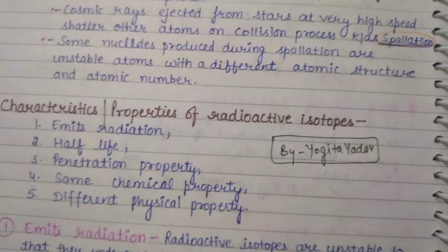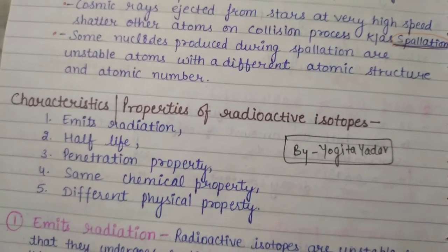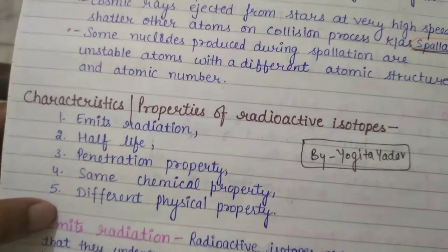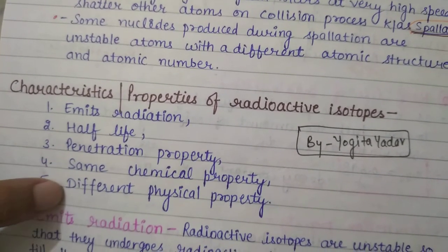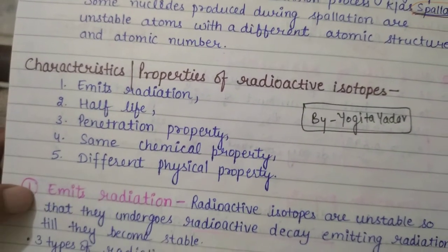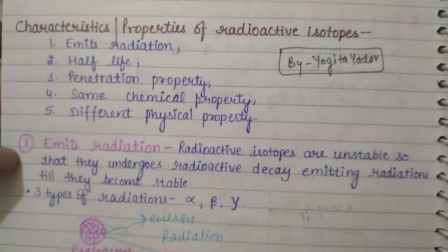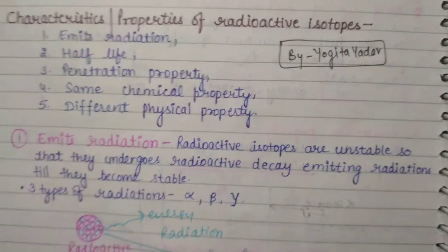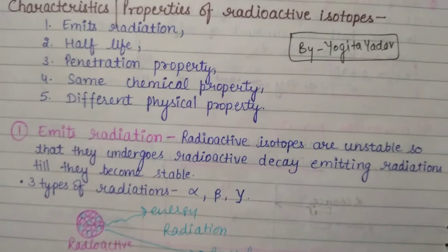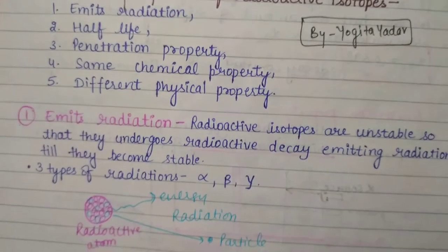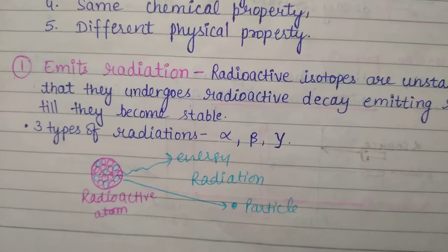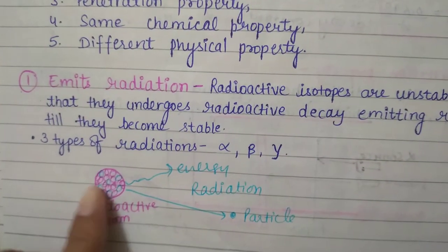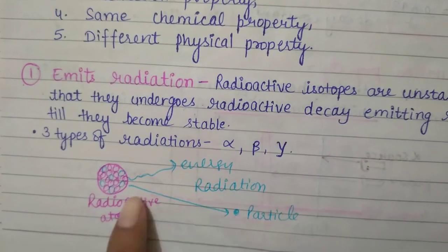Now for the characteristics or properties of radioactive isotopes. There are five characteristics: emit radiation, half-life, penetration property, same chemical property, and different physical property. Regarding emit radiation — radioactive isotopes are unstable, so they emit three types of radiation: alpha, beta, and gamma. The radioactive atom radiates energy and particles until it becomes stable.